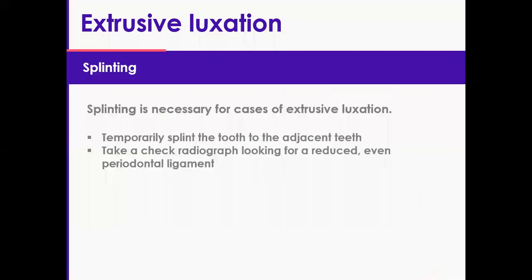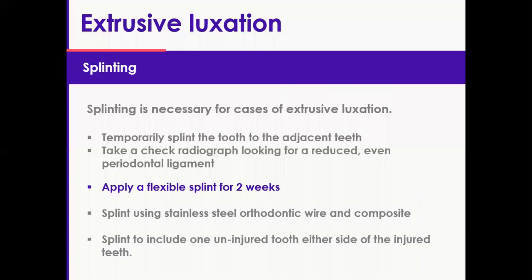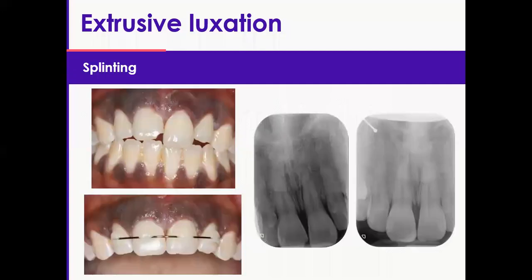Splinting is necessary for extrusions — it is not case-dependent as it was for subluxation. You need a two-week flexible splint. Use orthowire and include only one uninjured tooth on either side. You can see the result in this slide.